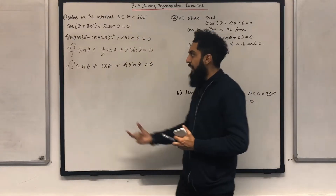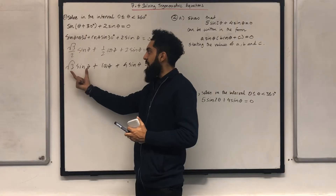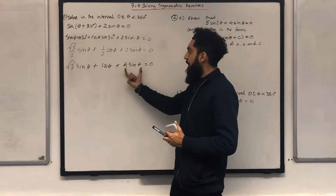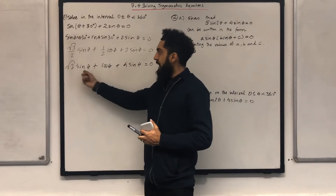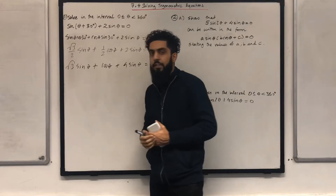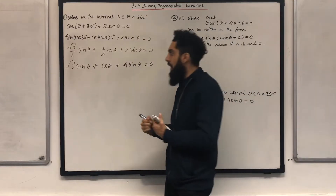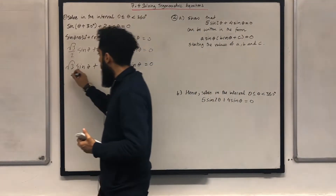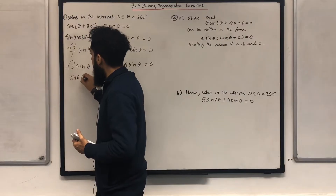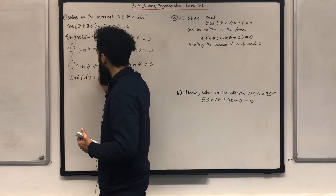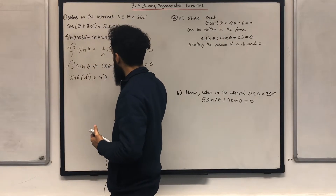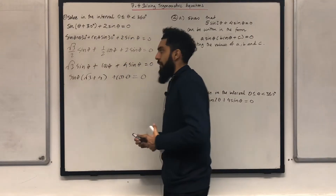If you look at square root 3 sine theta and 4 sine theta, there's a common factor of sine theta between the two terms. So I can take out sine theta and write: sine theta in bracket square root 3 plus 4, plus cos theta equal to 0.